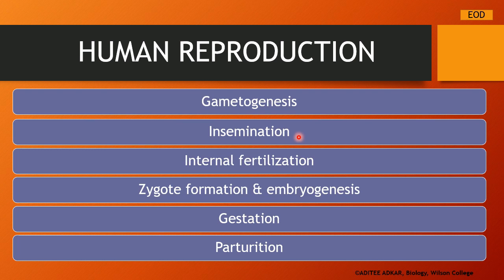After insemination, the male gametes fuse with the female gametes and the process of fertilization takes place. In human beings, the fertilization is internal fertilization. After fertilization, the zygote which is formed starts developing into an embryo — this is the process of embryogenesis. The next step is gestation, which is the time period for which the embryo or fetus is in the uterus of the mother — commonly called the pregnancy period. After completion of gestation, the final step is parturition, which is the delivery of the child.